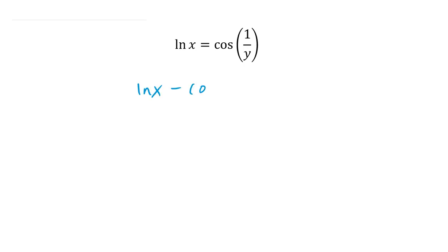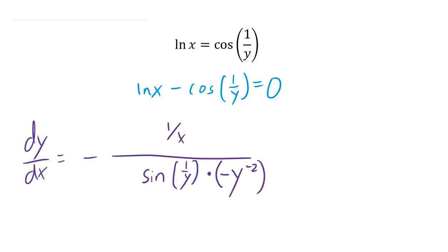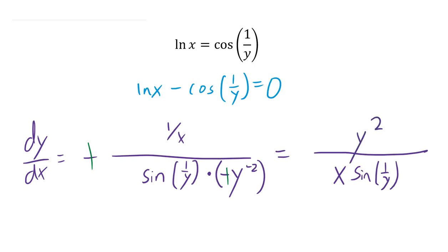I'll move everything to one side, and then dy/dx equals: partial derivative with respect to x gives me just 1/x — the cosine of (1/y) is a constant in the eyes of the partial derivative, so that doesn't matter. Partial derivative with respect to y: ln(x) is a constant, so that goes away; derivative of minus cosine is positive sine of (1/y) times derivative of the inside, so times derivative of y⁻¹, which is negative y⁻². With a negative here canceling the other negative, and 1/x in the numerator meaning x in the denominator, and y⁻² in the denominator meaning y² in the numerator, that's my dy/dx.